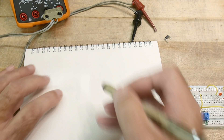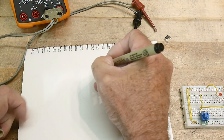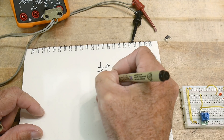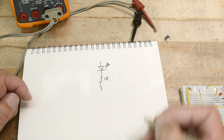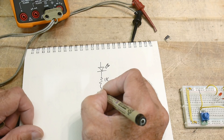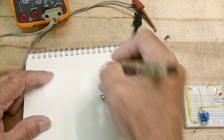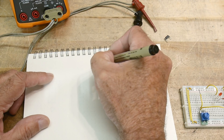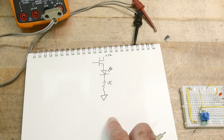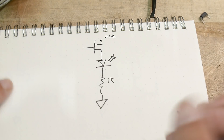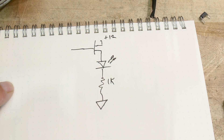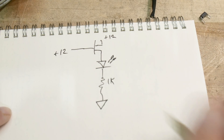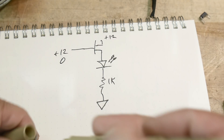Let's draw a circuit. We're going to have an LED and a 1k resistor, and this is going to be grounded. Then this is going to be our plus 12 volts, and our P-channel device will connect to plus 12. We'll connect the gate to plus 12 and see what happens, then connect it to zero and see what happens.